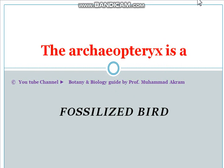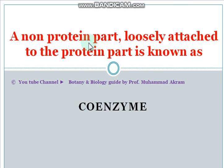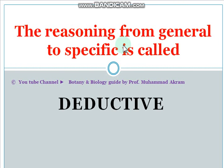A non-protein part loosely attached to the protein part is known as a coenzyme. Reasoning from general to specific is known as deductive reasoning. Reasoning is of two types: deductive reasoning goes from general to specific, while inductive reasoning goes from specific to general.